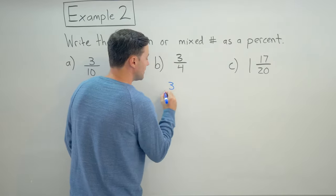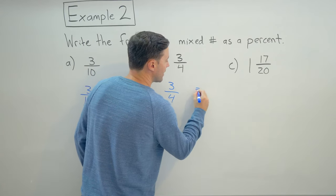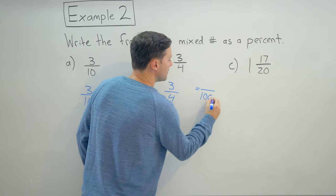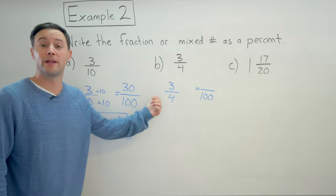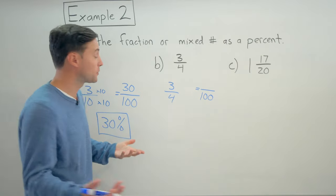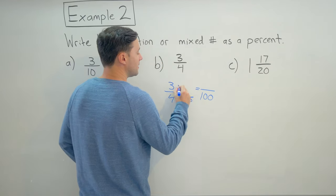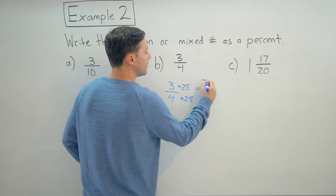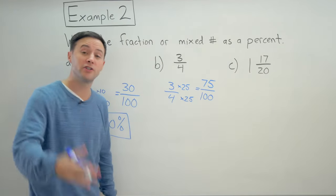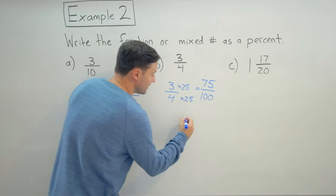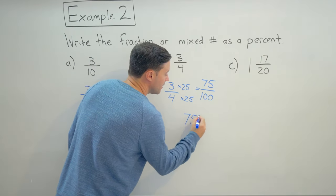Let's try the next one. So three fourths. Same idea. I want to get the denominator to become a hundred. Well, how do we get from four to one hundred? Times twenty five. So times twenty five in the denominator. Same thing in the numerator. And we get seventy five over a hundred, which as a percent is seventy five percent.